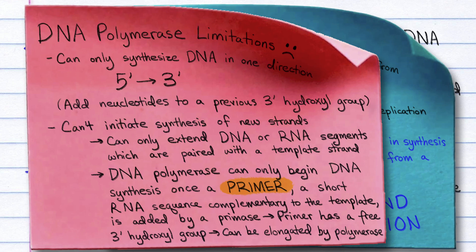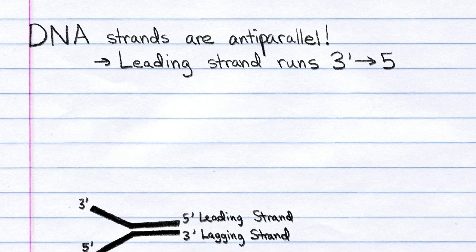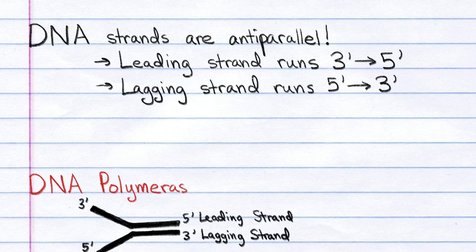Note that DNA strands are antiparallel. The leading strand runs in the 3' to 5' direction, but the lagging strand runs 5' to 3'. But DNA polymerase operates only in the 5' to 3' direction.